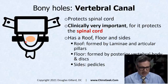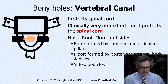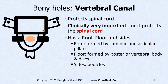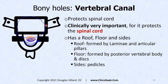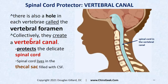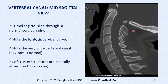The vertebral canal is made by that arch of bone — the roof is the lamina and articular pillars; the floor is the vertebral bodies, disc, and sides of the pedicles. People can get stenosis here: a big disc herniation or bulge going posteriorly combined with ligamentum flavum thickening can smash the thecal sac and compress the spinal cord — causing myelopathy. Here's a mid-sagittal slice showing the vertebral canal with nice lordosis.